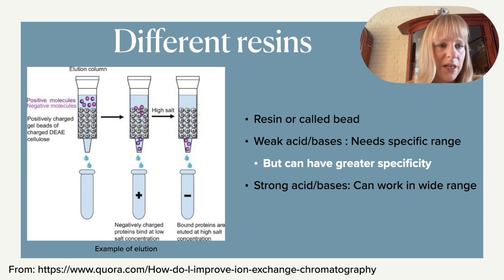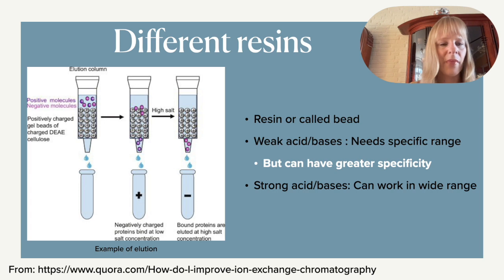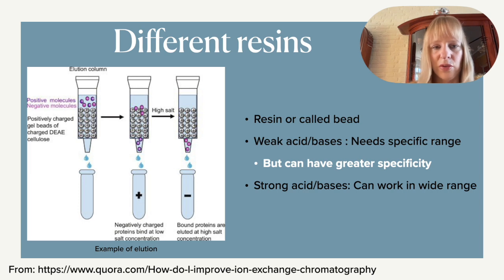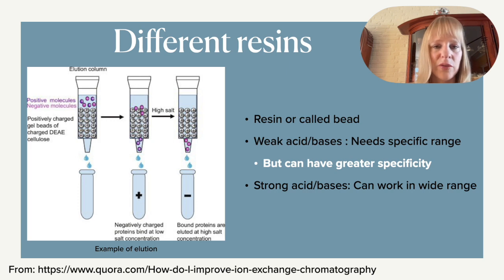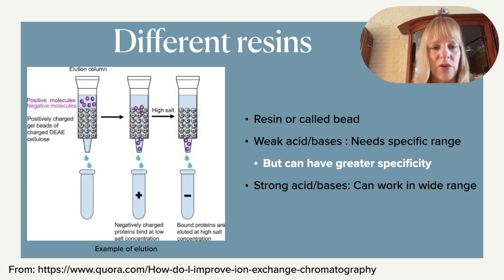Here is an example with a standard column where you have a mixture of both positively and negatively charged molecules. The DEAE is a very common cellulose resin that is positively charged, so negatively charged molecules will bind to it. Anything positively charged will come off, while negatively charged molecules will bind to the resin at low salt concentration. To elute these off, you can regenerate the column using a high salt concentration, a strong acid, or a base, and then recover your negatively charged compound.